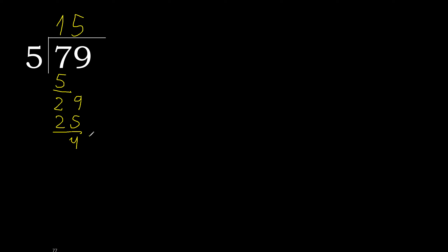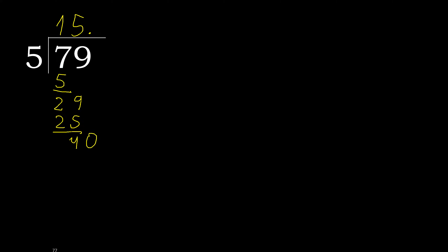There is no next number, therefore complete. Always complete with 0, here with a point. Complete: 0 point. 40. 5 multiplied by 8 is 40. 40 minus 40 is 0.